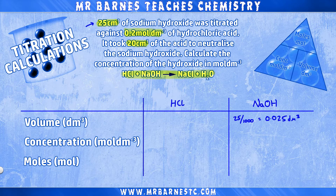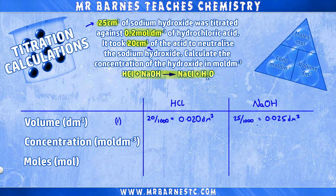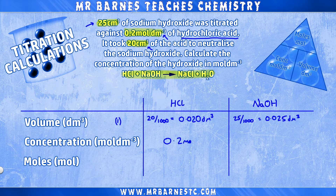I can do the same with the hydrochloric acid — 20 divided by 1000 gives me 0.02 decimetres cubed. Normally, just for converting from centimetres cubed to decimetres cubed you'll get one mark in the exam, so make sure you do that. The other bit of information in the question is the concentration of hydrochloric acid, so I can put 0.2 moles per decimetre cubed in. Now that all the information is in, I can focus on finding the concentration of sodium hydroxide.